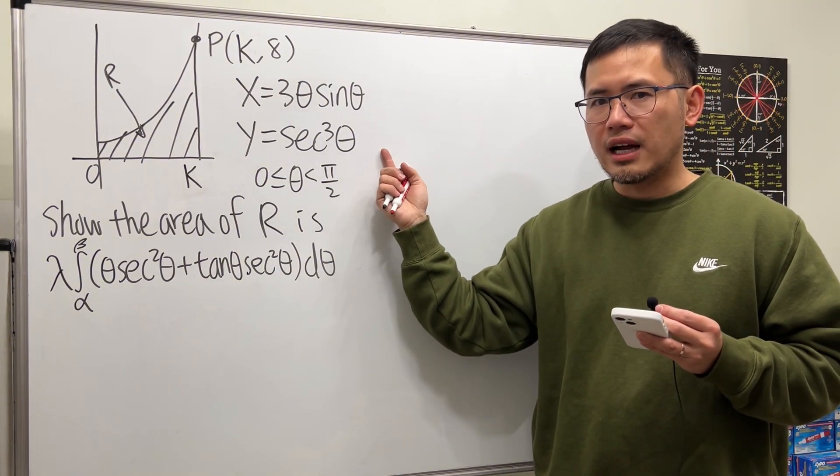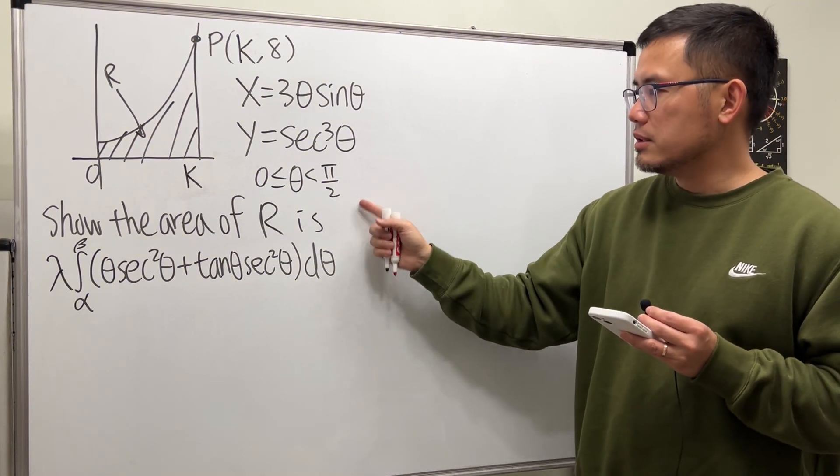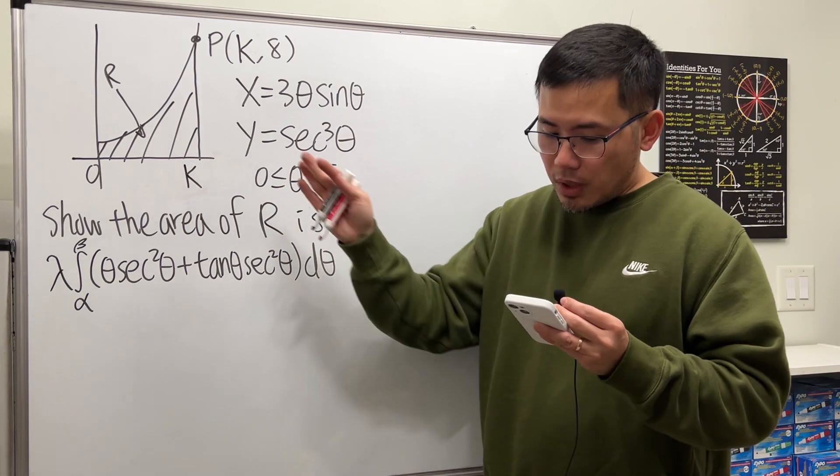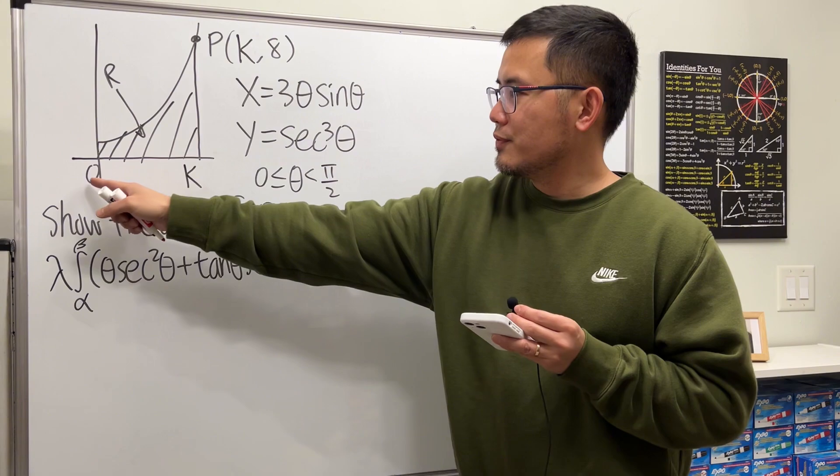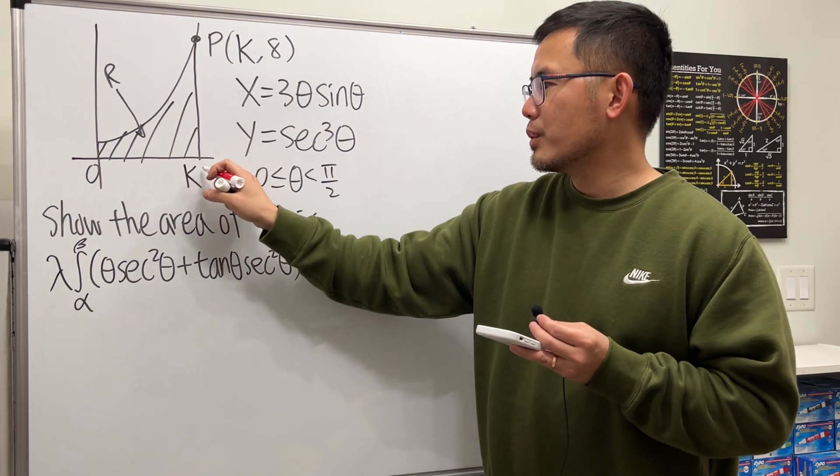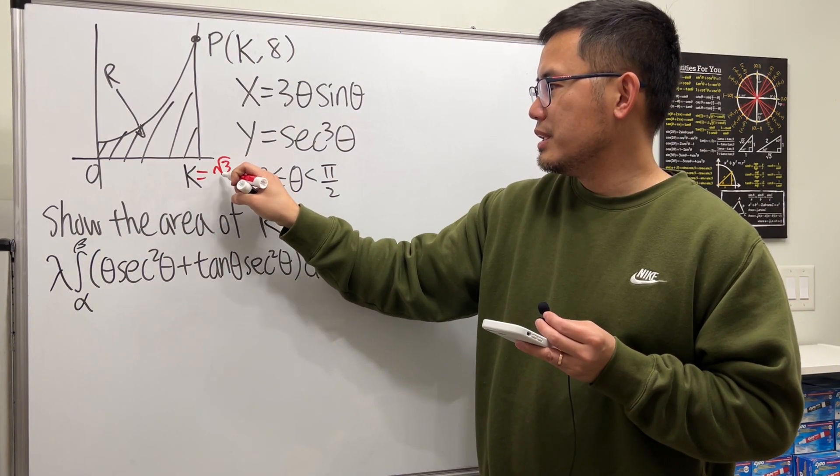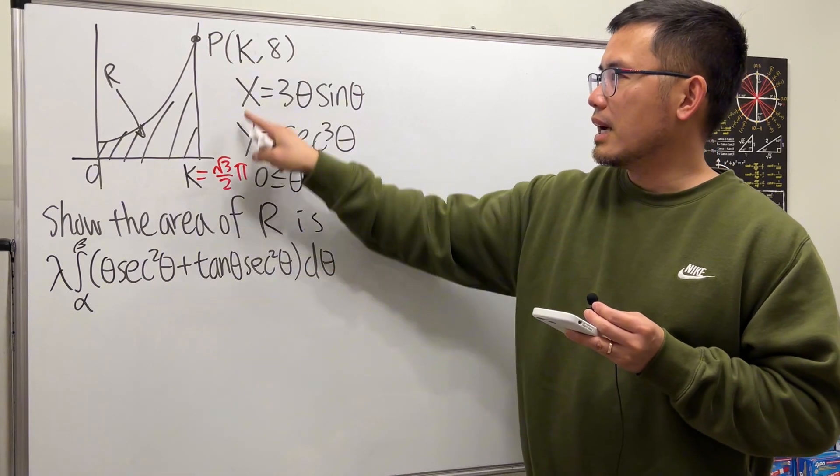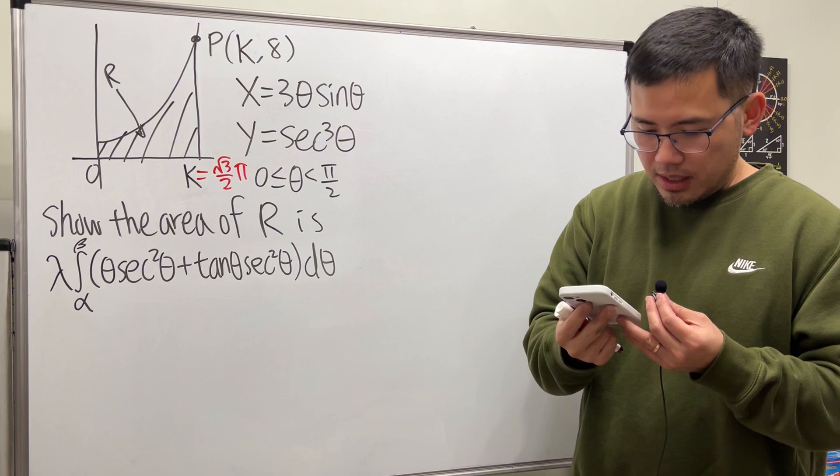It's okay, but be careful. Right here it says theta is in between 0 and π/2, and it says we have from 0 to k, and k is equal to √3/2 times π. So that is the k value here.